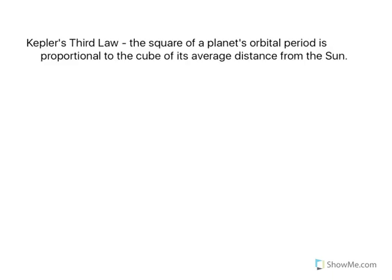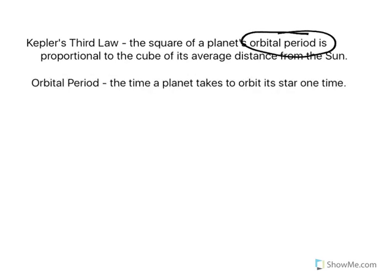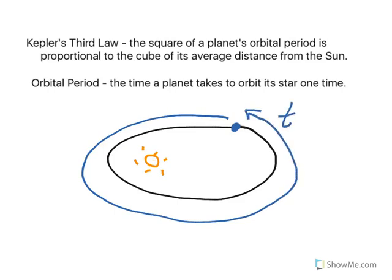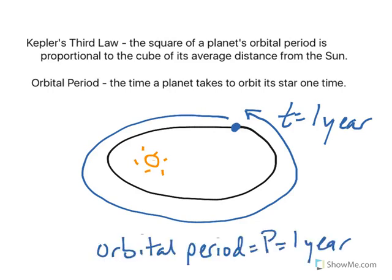Let's look at Kepler's third law. It tells us that the square of a planet's orbital period is proportional to the cube of its average distance from the sun. The orbital period is the time a planet takes to orbit its star one time. For Earth, the planet orbits the sun in one year, so the orbital period is one year. We give the letter P for orbital period — for Earth, P equals one year.